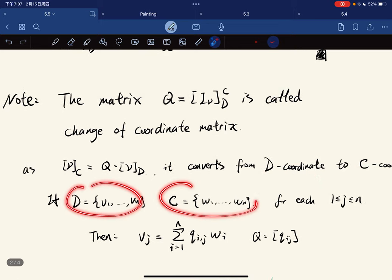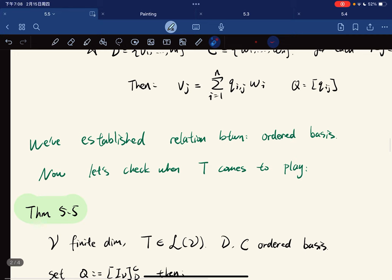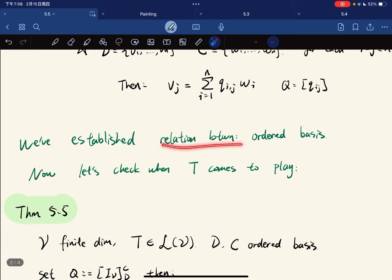If D is this and C is this, for each vj we have vj is equal to the row sum of wi where i runs from one to n.